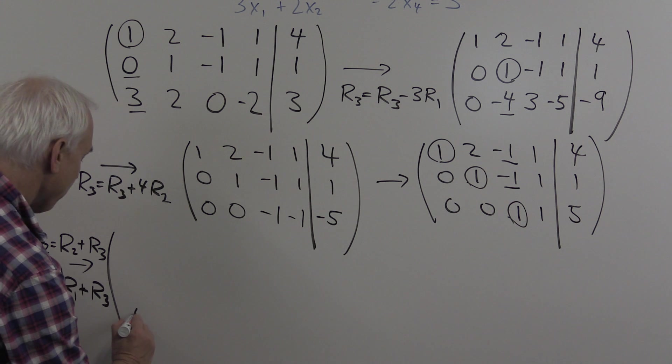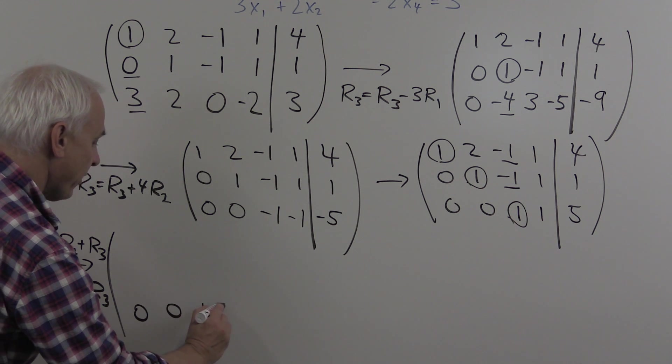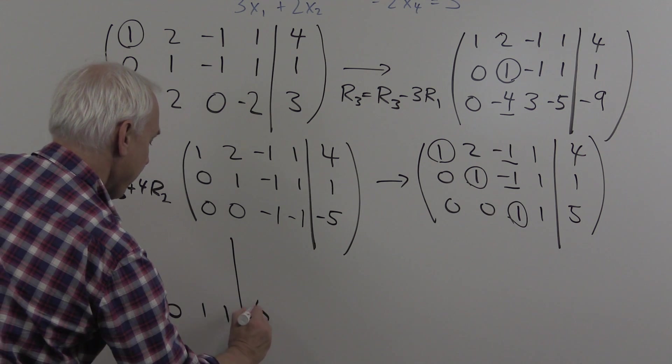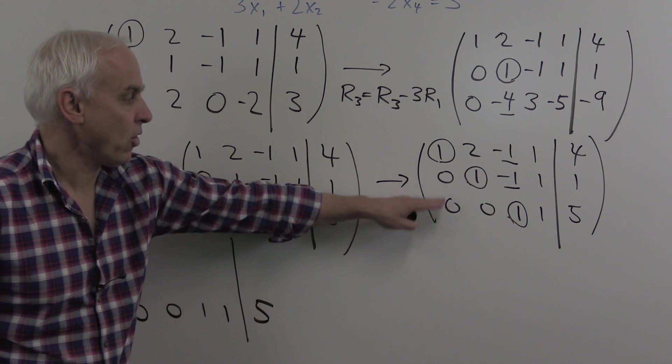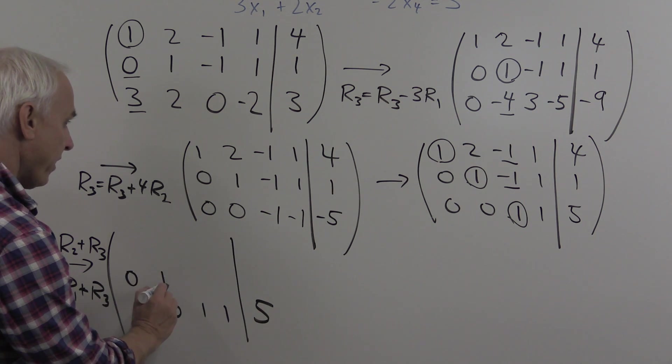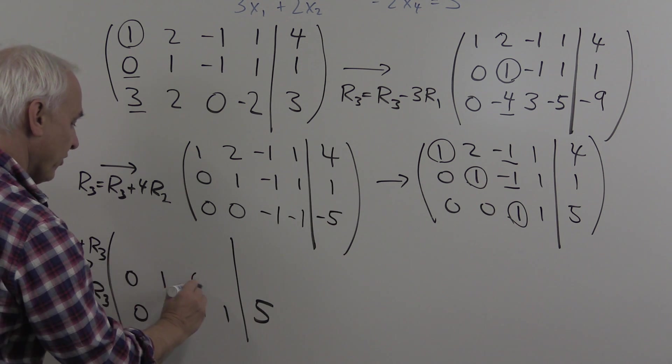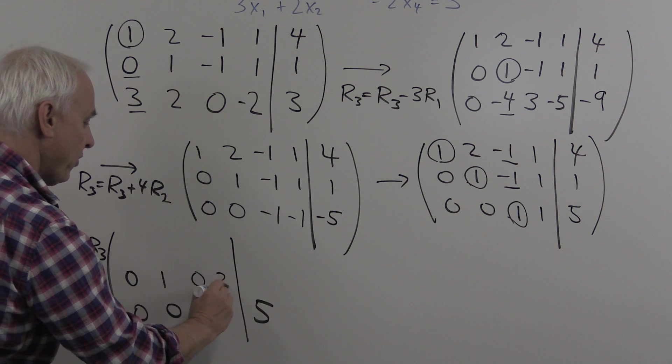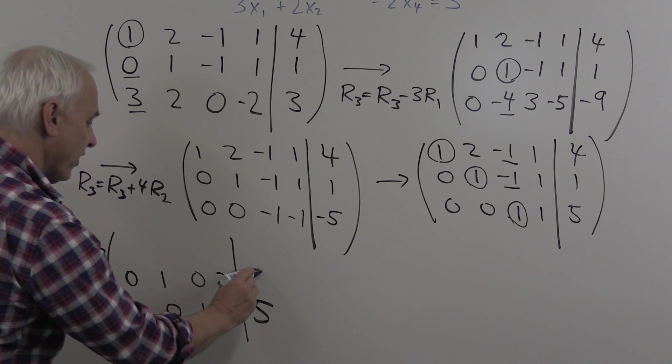We're going to start with the bottom row, keep it where it is: 0, 0, 1, 1, 5. We're going to add that row to the row above it, giving us 0, 1; 1 plus minus 1 is 0; 1 plus 1 is 2; and 5 plus 1 is 6. Similarly, we're going to add the bottom row to row 1: 1, 2, 0 here, and 1 plus 1 is 2 again, and 5 plus 4 is 9.